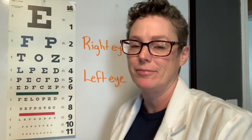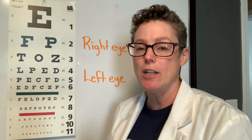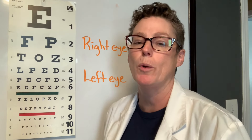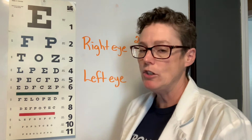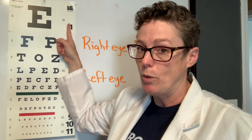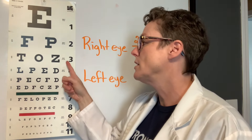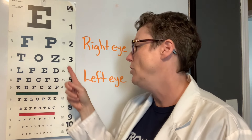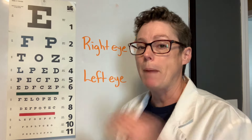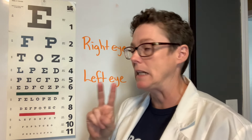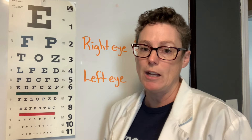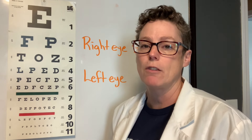When assessing the left eye, you want to employ a few different strategies to make sure they're not just repeating what they've already said. One strategy is to start at a different line — you don't have to start at line 1 like the first time; you can start at line 3 and skip to line 5. A second tip is to go to line 4 and have them read it backwards, which helps you ascertain that what they're reading is authentic to their vision.